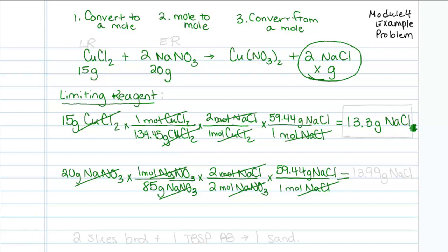When I figure this out, 20 divided by 85 times 2 divided by 2 times 59.44 will give me 13.99 grams of sodium chloride. So what I see here in this situation is if I reacted all my 15 grams of copper chloride, I get out 13.3 grams of sodium chloride. Reacting all of my sodium nitrate reactant will give me 13.99.